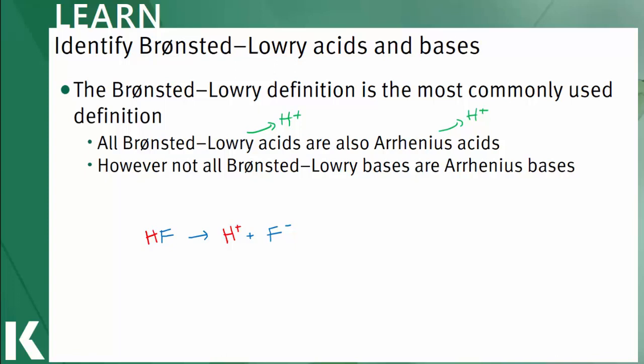The contrast comes with the base definitions. Arrhenius bases deal with donating hydroxide ions in solution, and Bronsted-Lowry is all about accepting hydrogen ions. Taking my earlier reaction, fluoride ion is an example of a Bronsted-Lowry base since it will accept a proton and increase the pH of a solution.